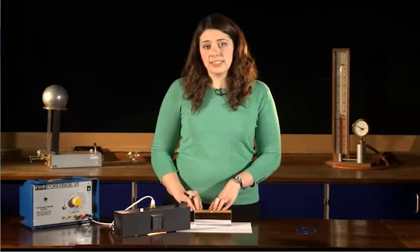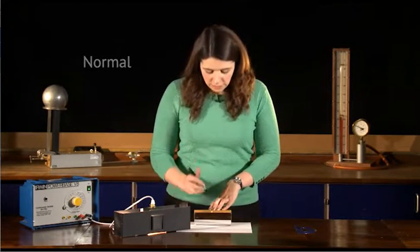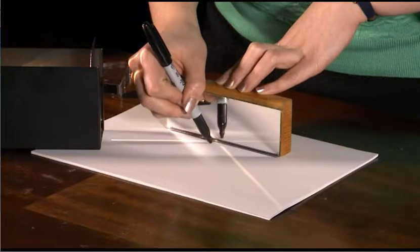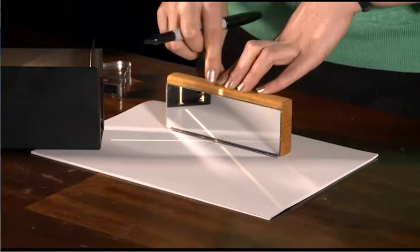The next thing to do is draw a normal. A normal is a perpendicular line that goes straight up from where the light has hit the mirror. I'll fill that in later with a ruler.